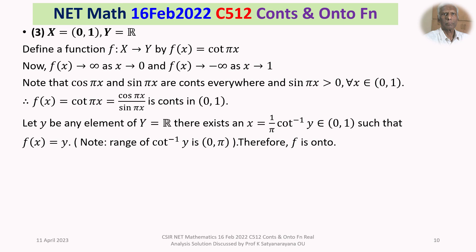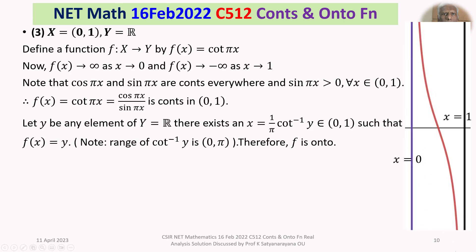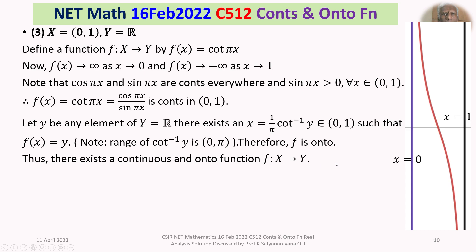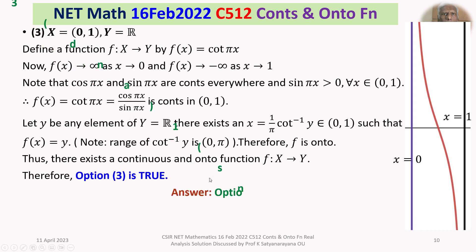We have successfully shown an example — this is the diagram for cot(πx). Thus, there exists a continuous and onto function f from X to Y, so option 3 is true. Our final answer is that options 1 and 3 are true; the remaining options 2 and 4 are not true. That is the detailed discussion of the solution of the problem from the section Real Analysis, based on the concepts of continuity and onto-ness of functions. I am sure that you have understood the solution of this problem. I wish you all the best. Thank you.